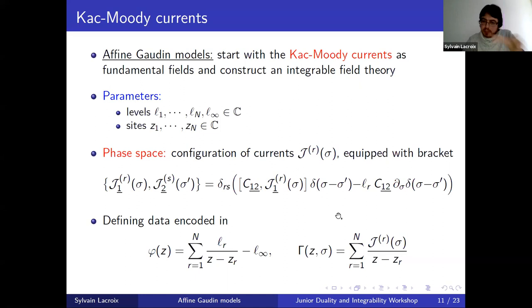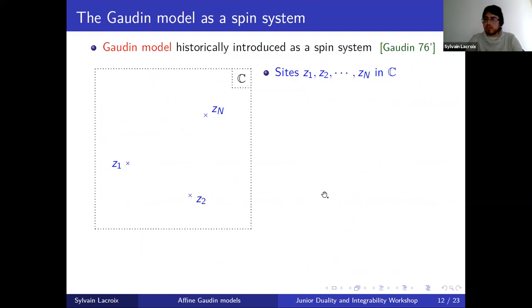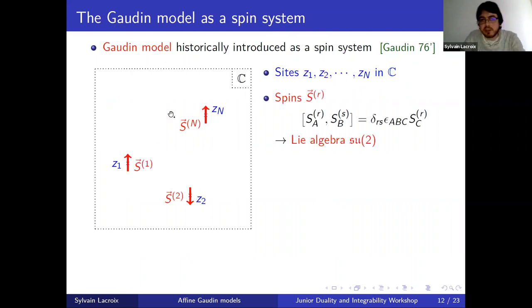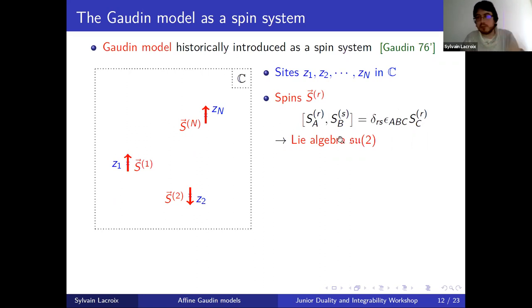We gather all defining data — levels, sites, and Kac-Moody currents — into two objects depending on the spectral parameter z: the twist function phi(z) and the Gaudin Lax matrix gamma(z). Now to motivate how the Hamiltonian is constructed, it is useful to return briefly to the abstract origin of these Gaudin models as spin systems. The finite Gaudin model as a spin system depends on certain sites in the complex plane. To each site we attach a spin — quantum operators with commutation relations of SU(2). Spins at different sites commute, and at one site they satisfy the Lie algebra SU(2) commutation relations.